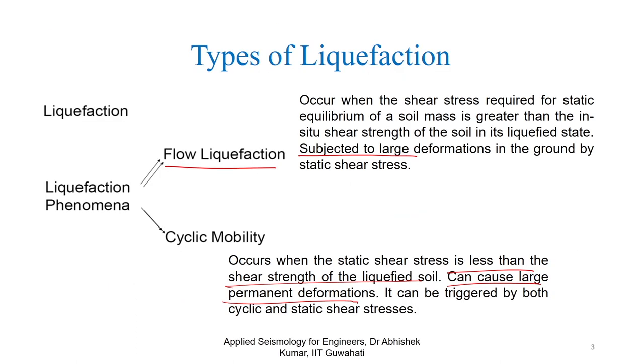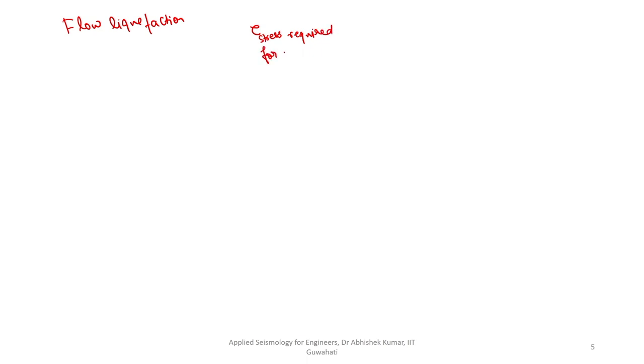Flow liquefaction is related to identifying the state where, considering the initial state of the soil and the in-situ strength of the liquefied soil, the stresses applicable on the sample are much higher than that strength. For monotonic loading conditions, the condition for flow liquefaction is: stresses required for equilibrium are much higher than the shear strength of soil in its liquefied state. This can be met not only during cyclic or seismic loading but also during monotonic loading.